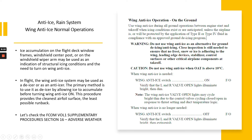Let's check FCOM Volume 1, Supplementary Procedure Section 1-6 — wind anti-ice operation on the ground. Use wind anti-ice during all ground operations between engine start and takeoff when icing conditions exist or are anticipated, unless the airplane is or will be protected by the application of type 2 or type 4 fluid in compliance with an approved ground de-icing program. Warning: do not use wind anti-ice as an alternative for ground de-icing or anti-icing. Close inspection is still needed to ensure that no frost, snow, or ice is adhering to the wings.